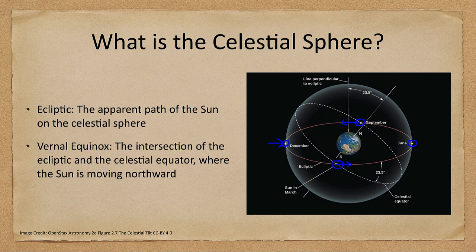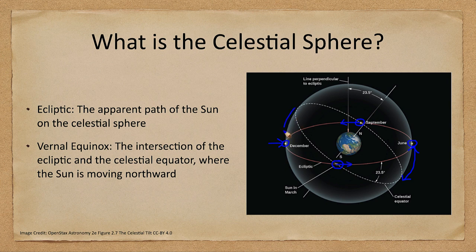Those are the beginnings of each season, and they have a very specific notation. At the vernal equinox — the beginning of spring — the sun crosses the celestial equator heading north. In September, the autumnal equinox crosses the celestial equator heading south. In June, it is furthest above the celestial equator, so highest in the sky. And in December, it is furthest below the celestial equator, so it is lowest in the sky.